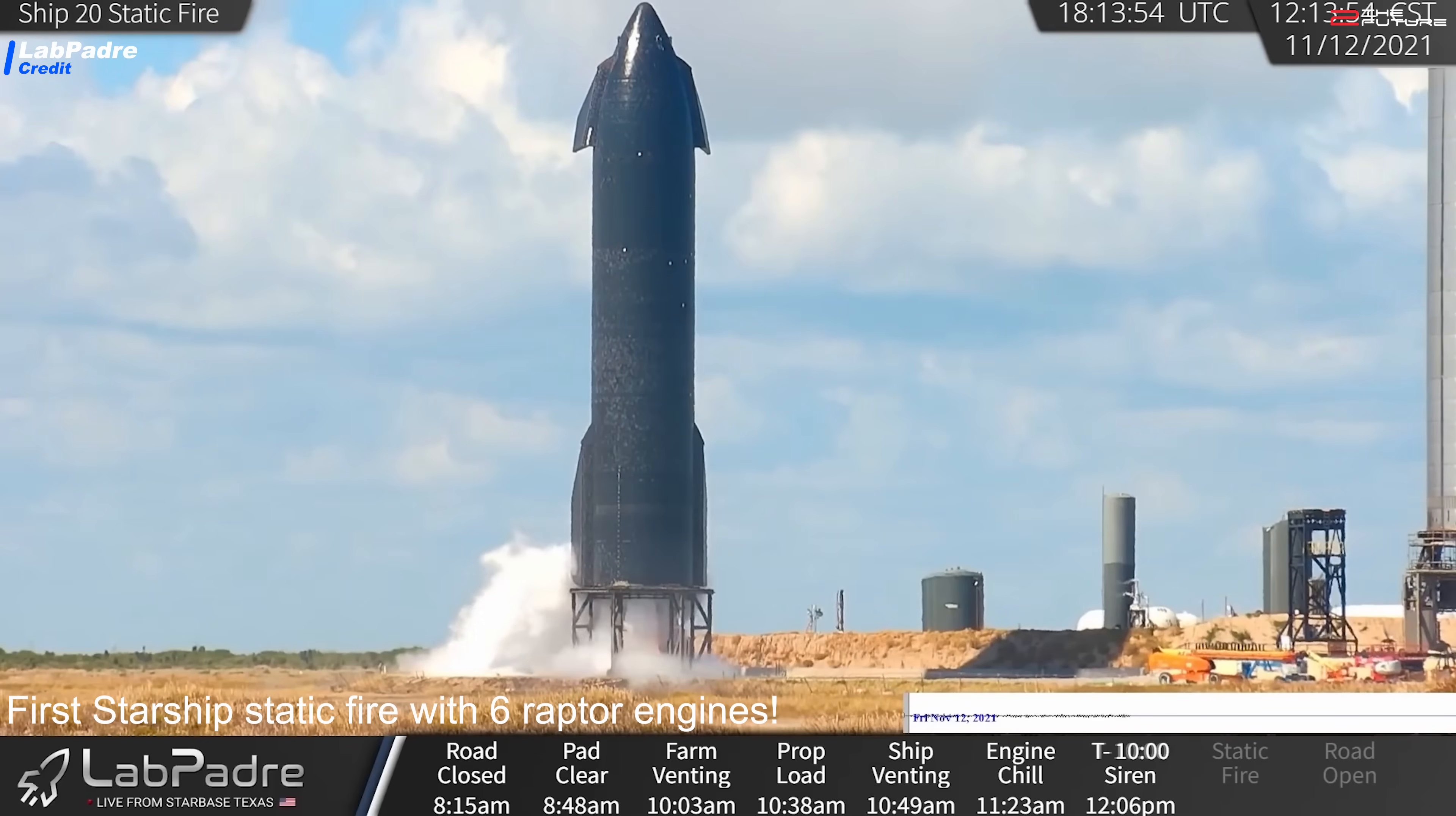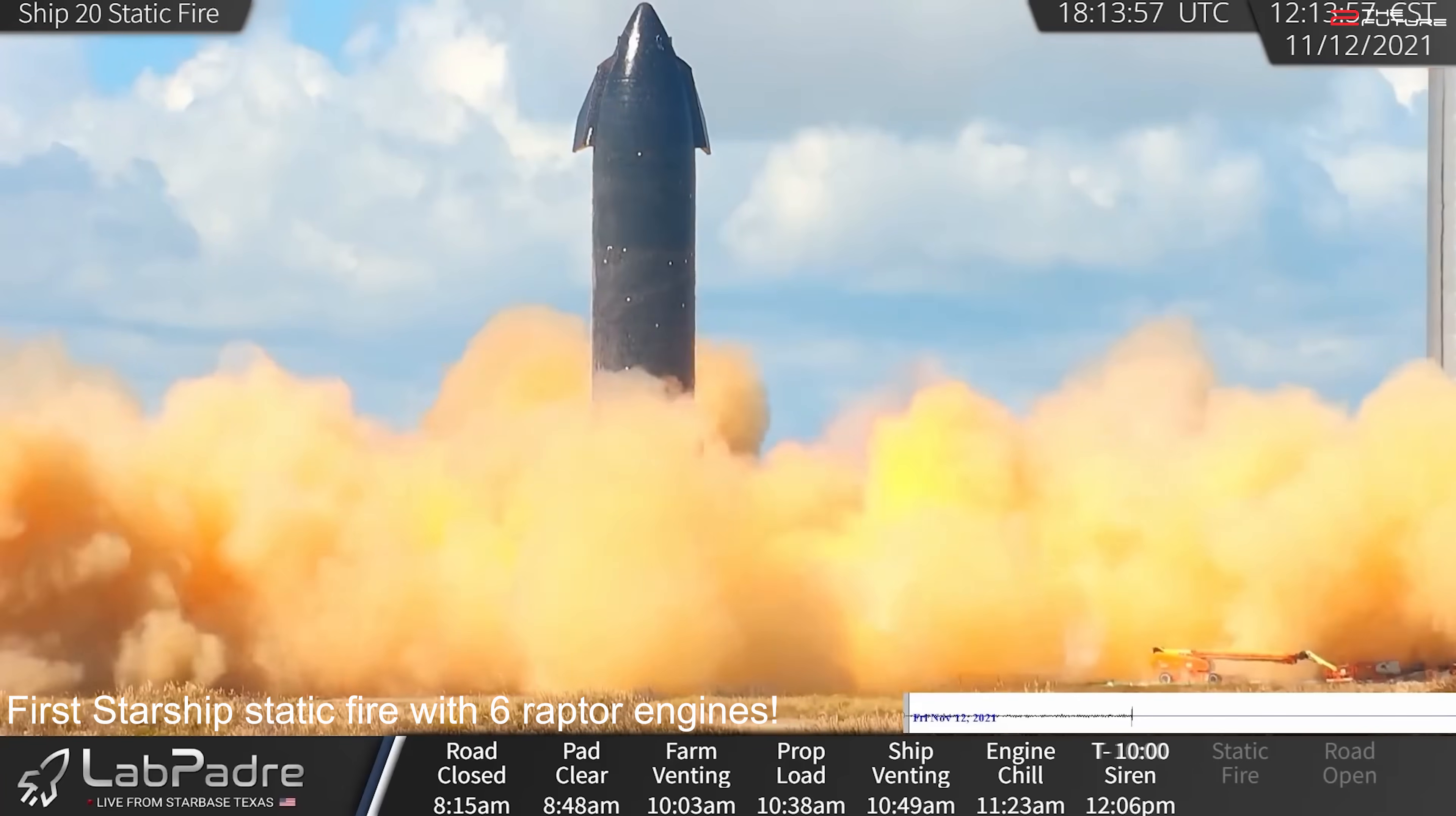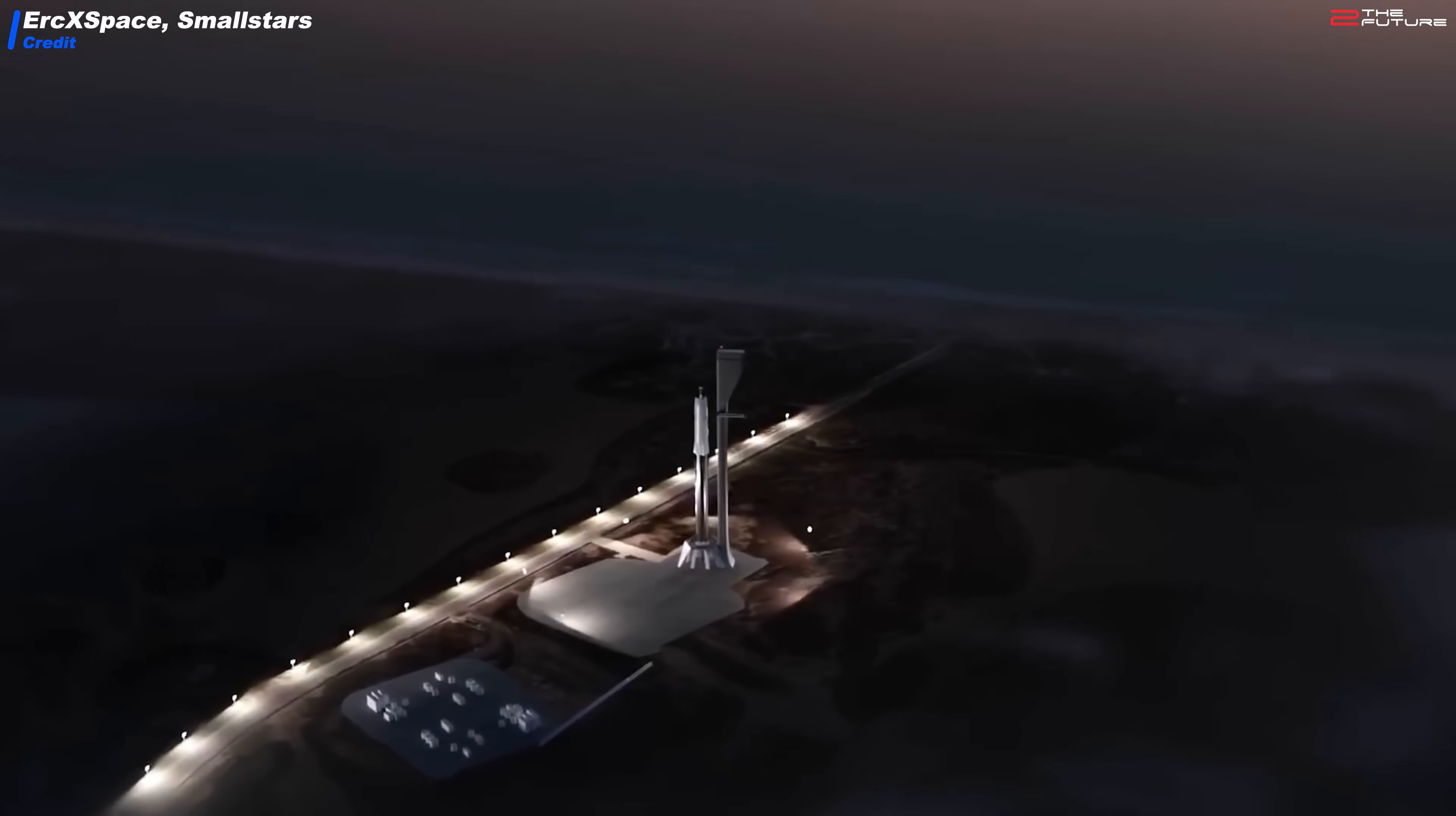Or whether they will decide to opt for a more thorough Environmental Impact Statement, which would be really bad for SpaceX, as this procedure usually takes years to complete. In all this time, SpaceX would be blocked from launching Starship and Super Heavy from Boca Chica. But Elon seems to be pretty optimistic.